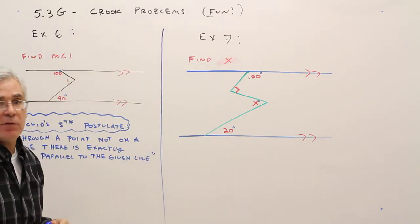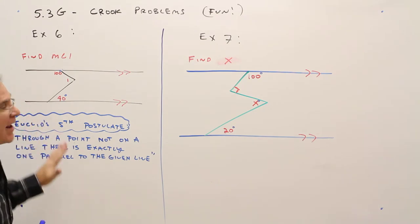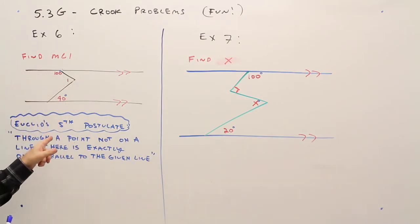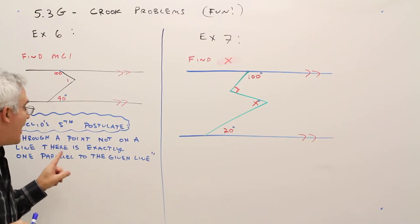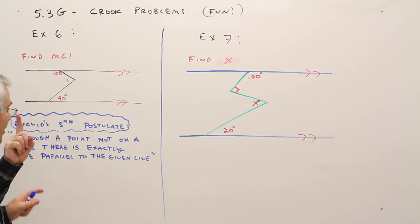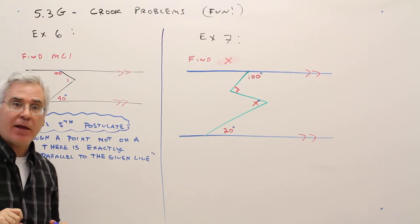So here we go. I've got examples 6 and 7. The basis of this is Euclid's fifth postulate. Through a point not on a line, there is exactly one parallel line to the given line.